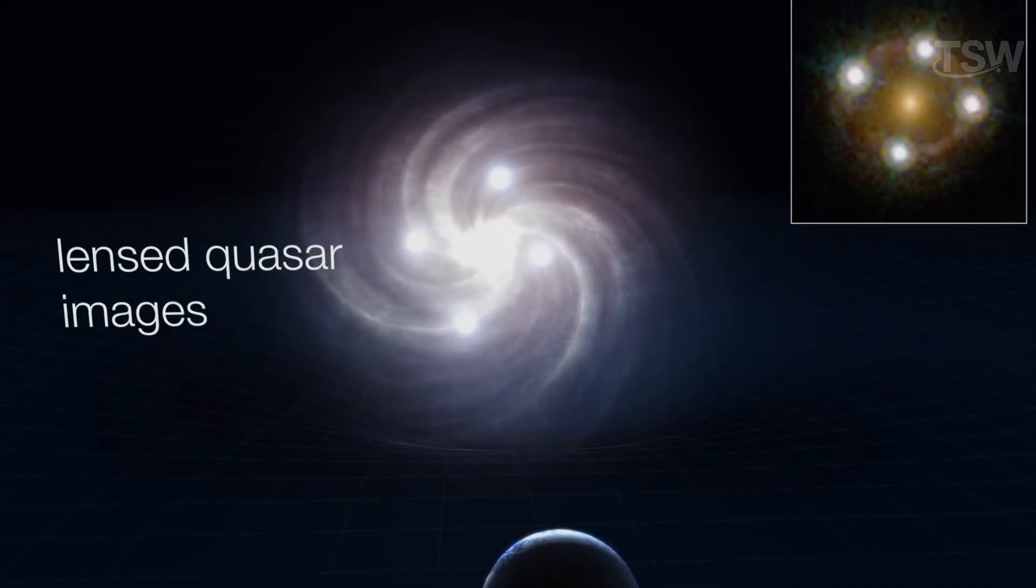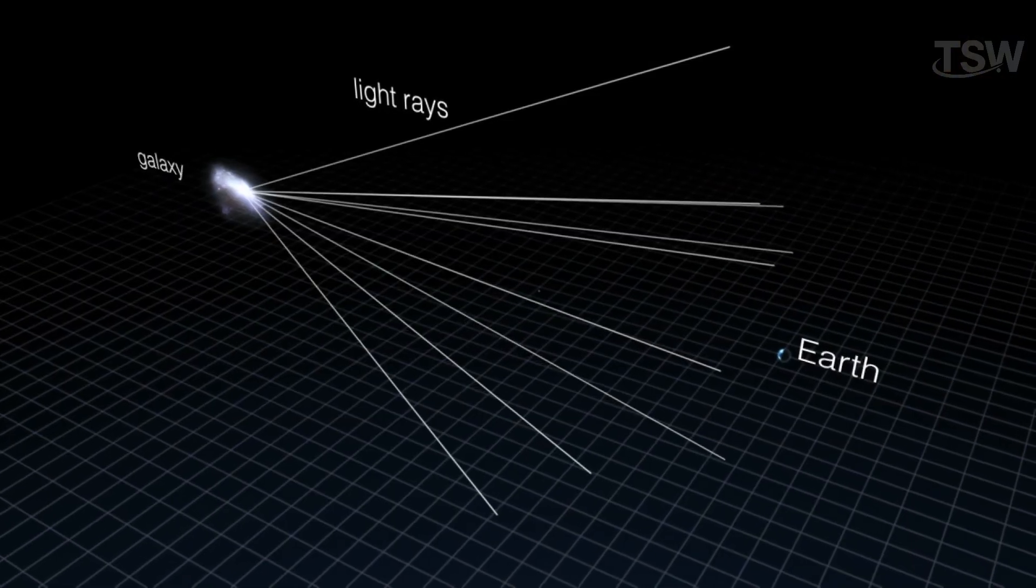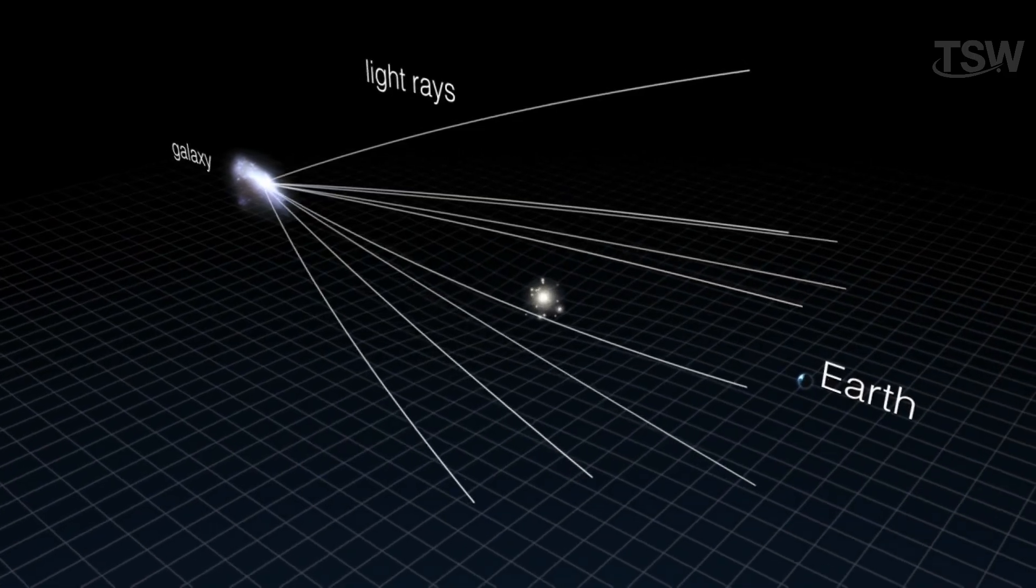The result? A kind of cosmic illusion, where we see distorted, magnified, or even multiplied images of those faraway objects.